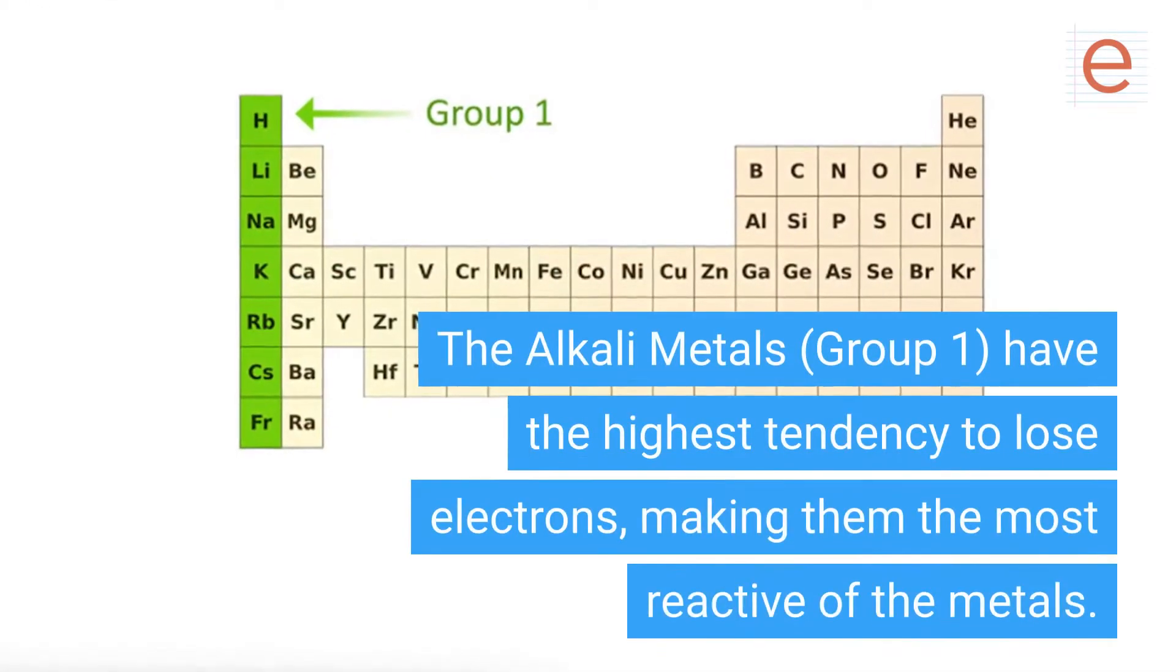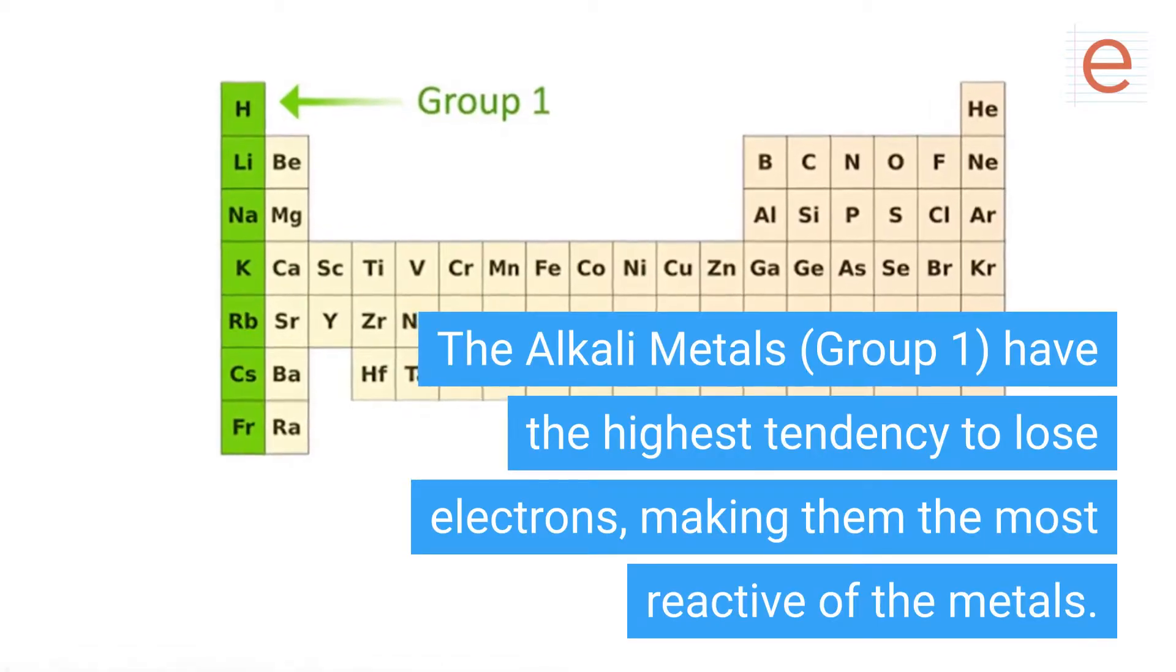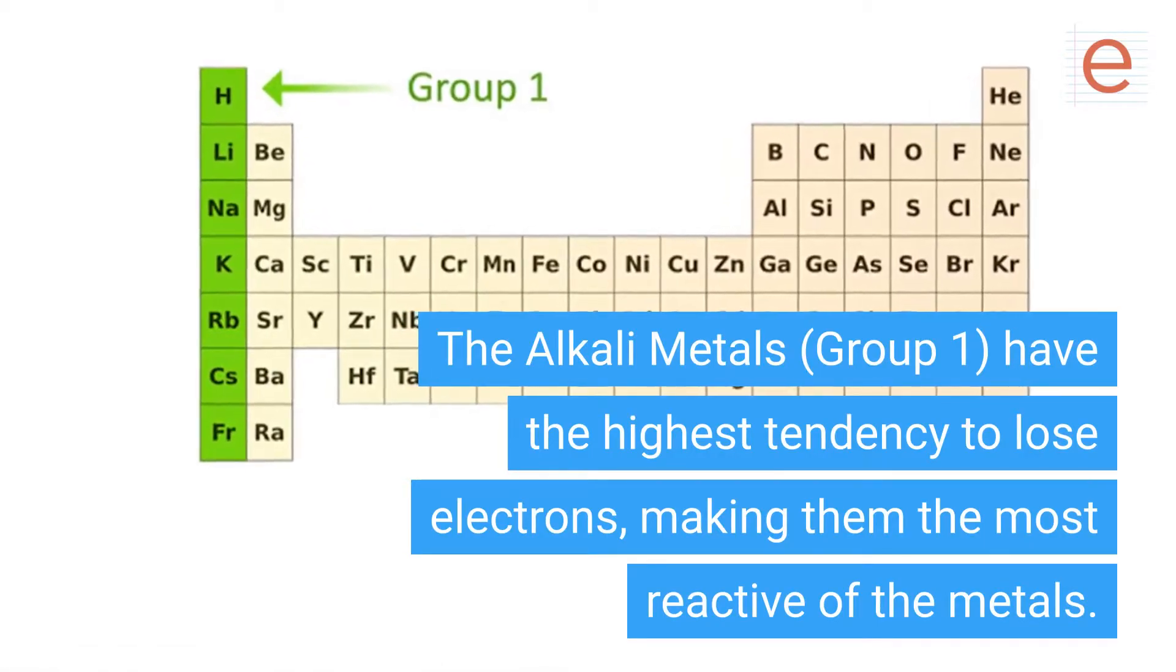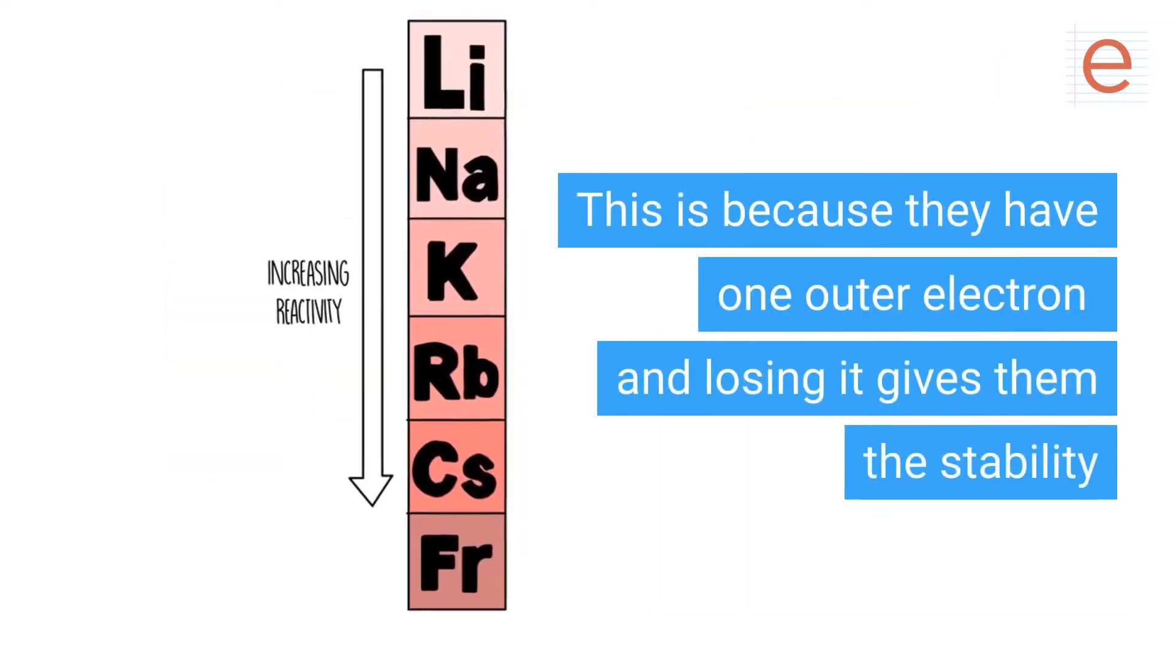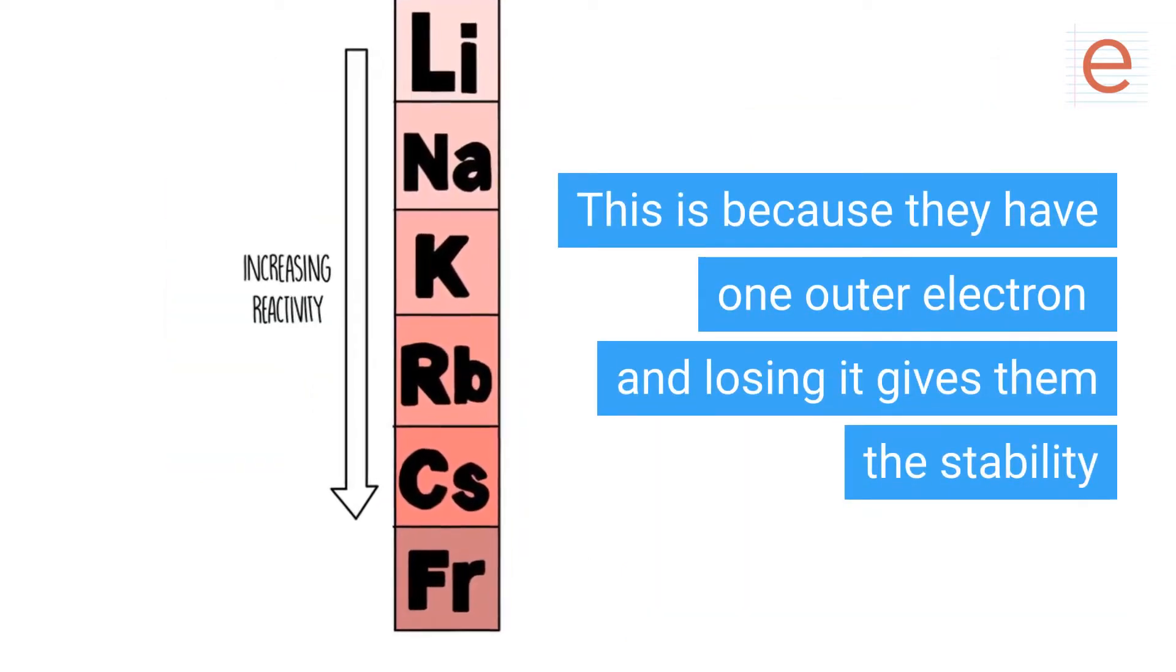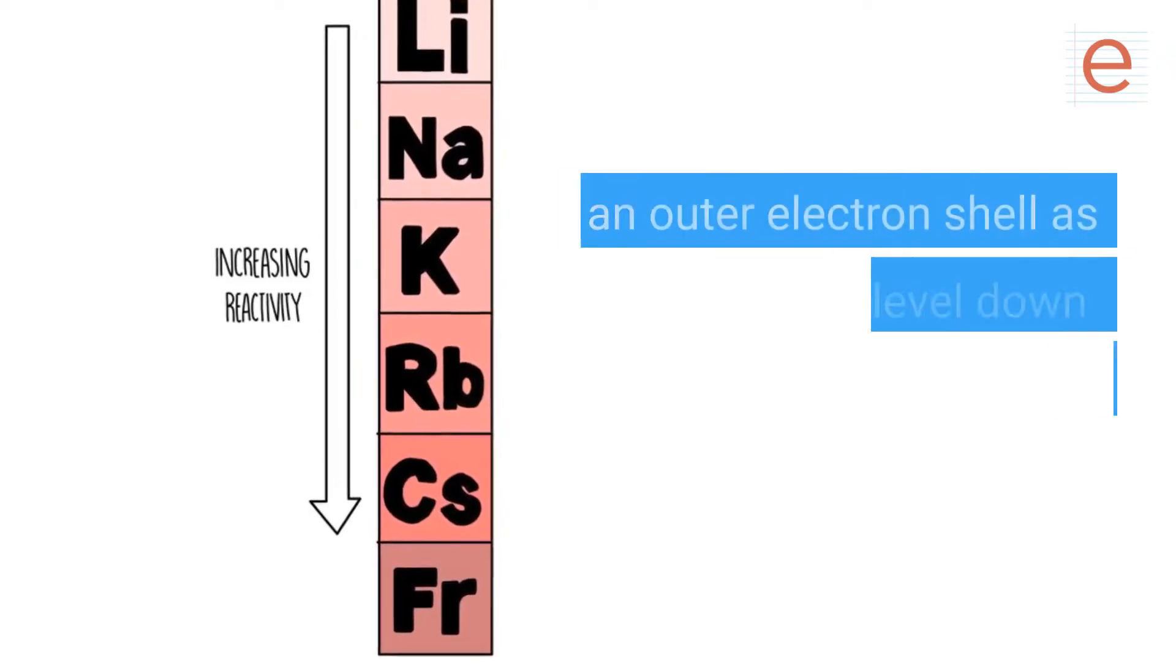The alkali metals, group 1, have the highest tendency to lose electrons, making them the most reactive of the metals. This is because they have one outer electron, and losing it gives them the stability of a full outer electron shell as the next level down becomes the highest occupied level.